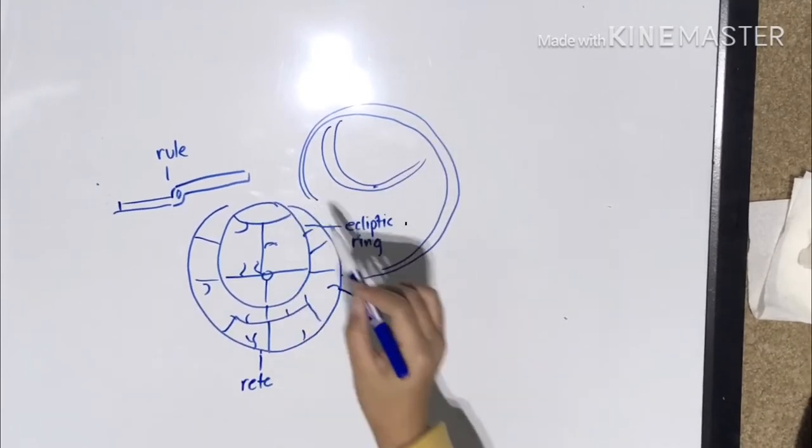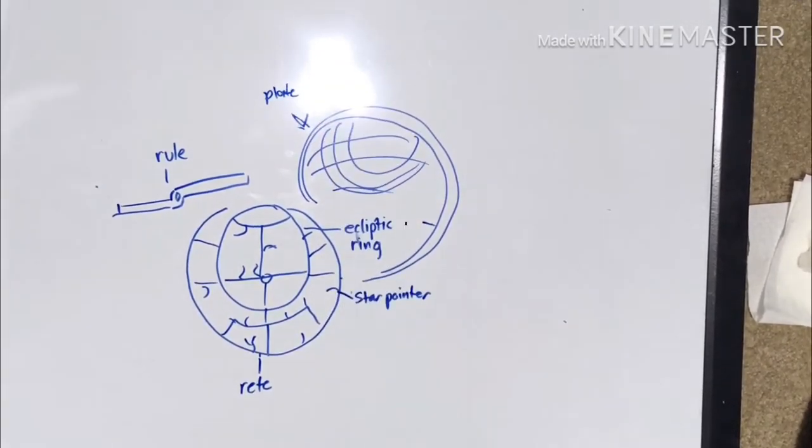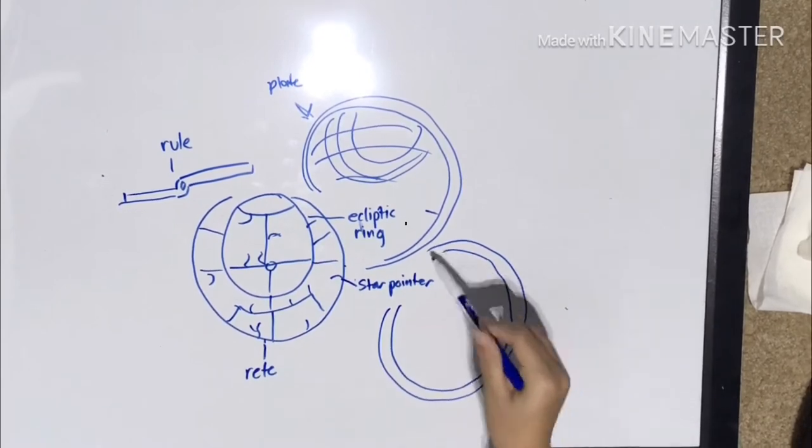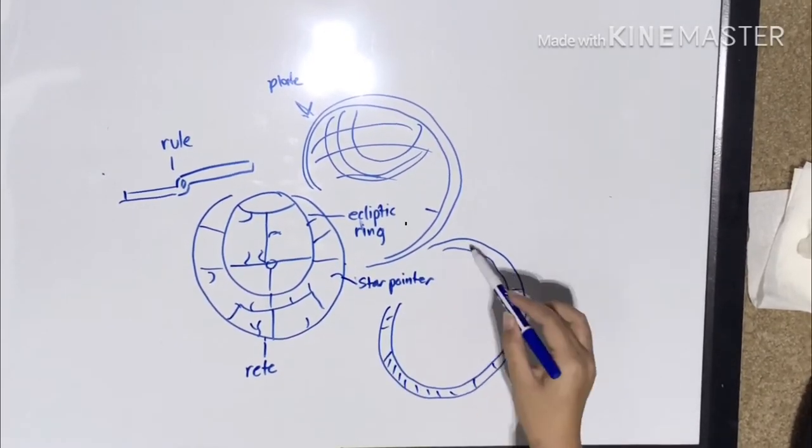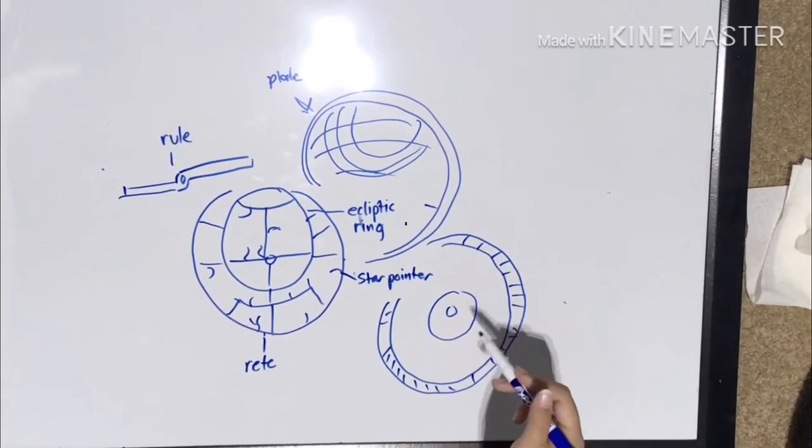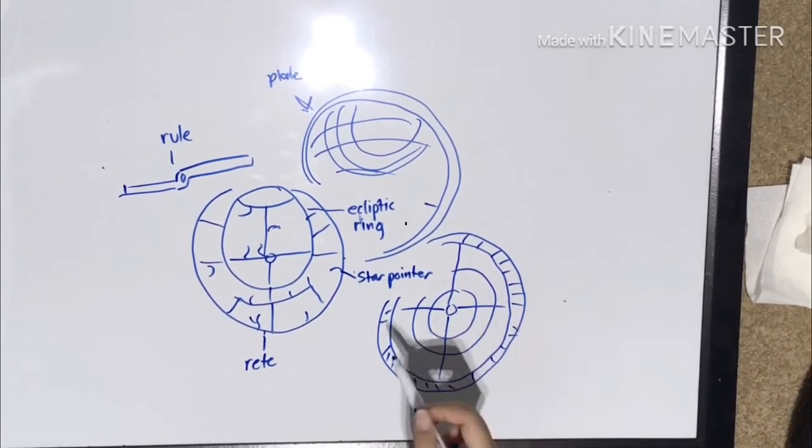Because each latitude needs its own projection, most astrolabes come with its own individual latitudes, and all of it is usually stacked on top of each other within the astrolabe. The rule is located on the front of the astrolabe, marking the hours at a turn.